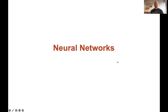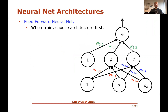Hi and welcome back to these videos on neural networks. In this video, we'll look a little bit more at one particular architecture for neural nets, and this particular one is the feed-forward neural network, which is the simplest form of neural network architecture that there is.